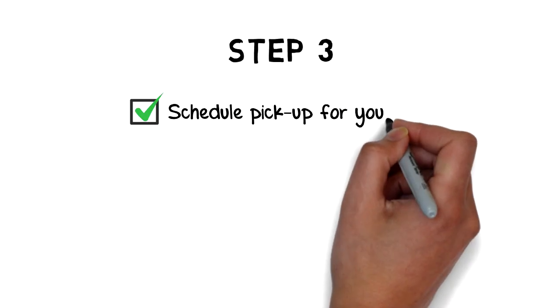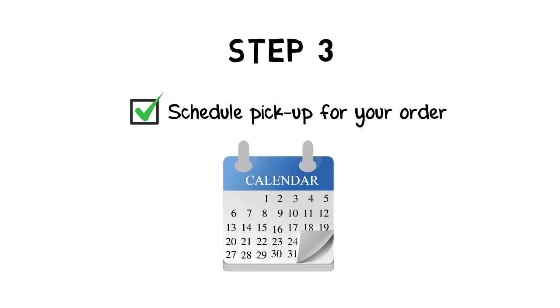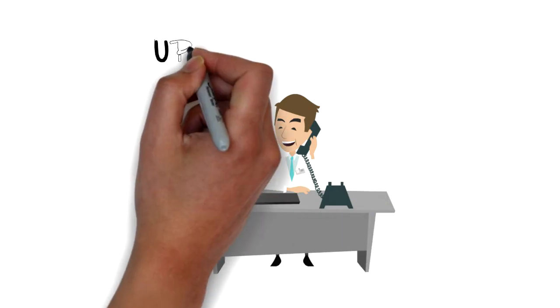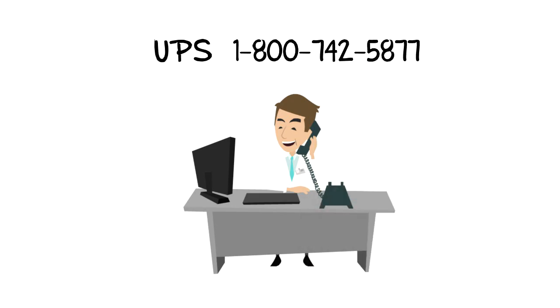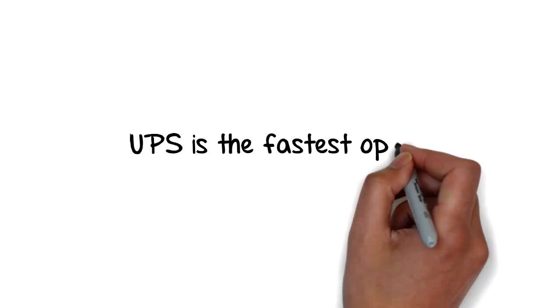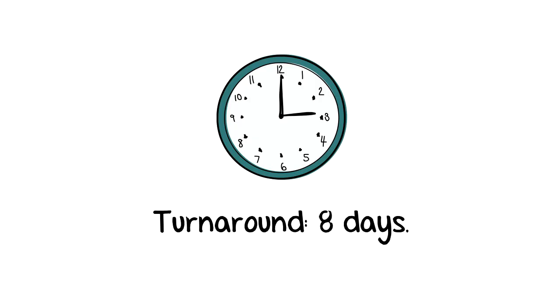Step three: schedule pickup for your order. To arrange delivery of the packages, call UPS at 1-800-742-5877. UPS is the fastest option. The turnaround time is eight days—you will receive your crown, bridge, or denture after eight days.